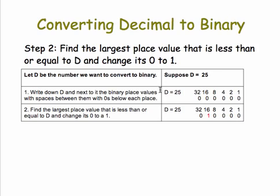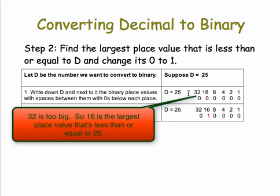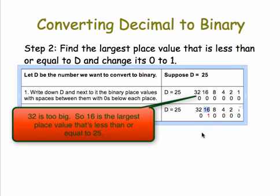Step two: find the largest place value that's less than or equal to D and change its zero to a one. So in our case, D is 25, and the largest number here that's less than or equal to it is 16, so I'm going to change its zero to a one.